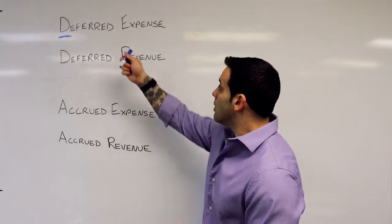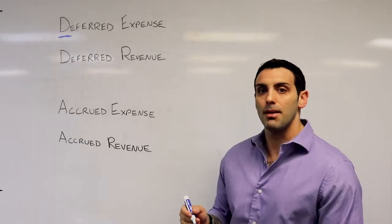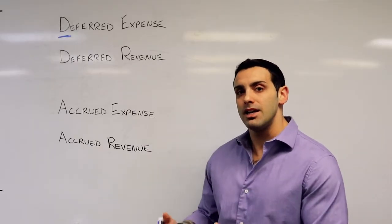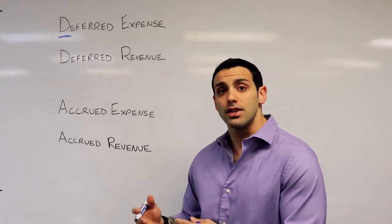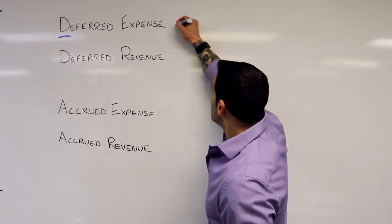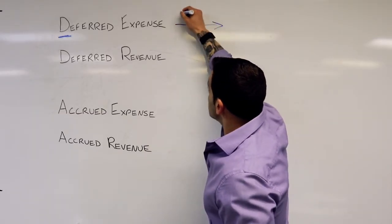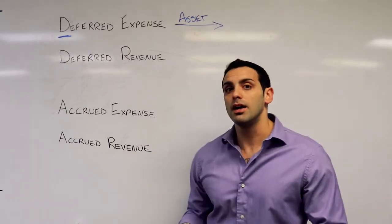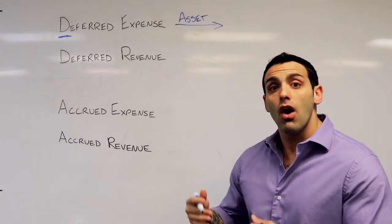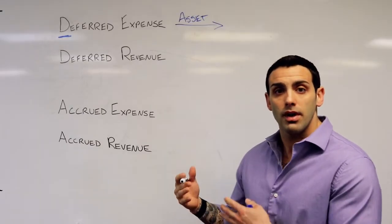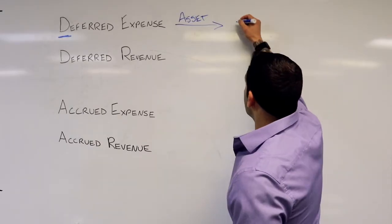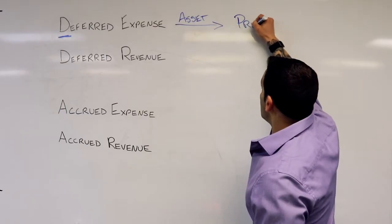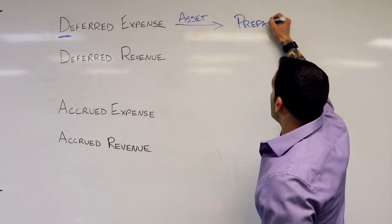If we have a deferred expense, that means we paid dollars before the action of incurring the expense. This sounds like an asset because our vendor owes us since we prepaid. This is a prepaid asset.